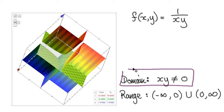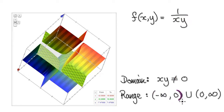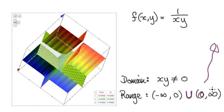The domain is this, and for the range: the range can be as low as it wants in the negative direction, and this thing will never be 0 — it can't be exactly 0. So we use a round bracket for 0, then union, and then it has the potential to go as big as it wants towards infinity. The range is (−∞, 0) ∪ (0, ∞).